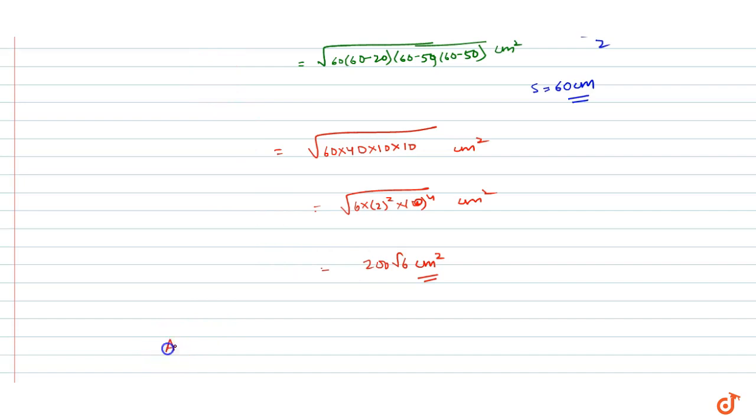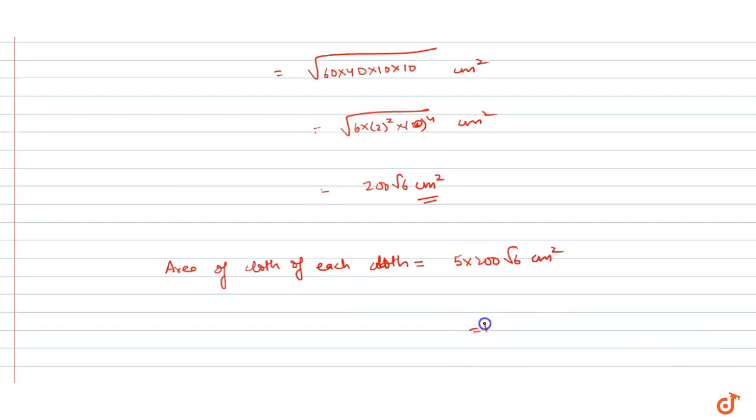The area of one piece of cloth is 200√6 cm². For cloth of each color, we have five pieces of one color and five of another. This is our answer for the given question.